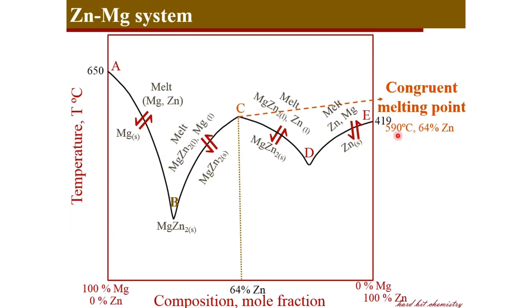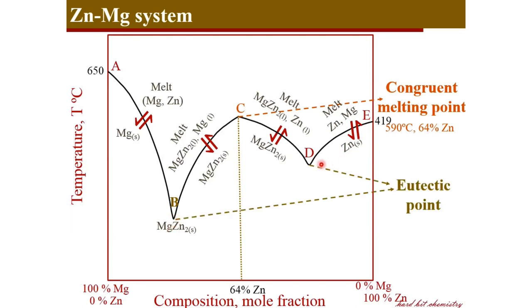There are two eutectic points in the zinc-magnesium system: point B, which is a eutectic between solid magnesium and the compound di-zinc magnesium, and point D, which marks the eutectic between solid zinc and the compound di-zinc magnesium. So there are two eutectic points, and C is the congruent melting point.